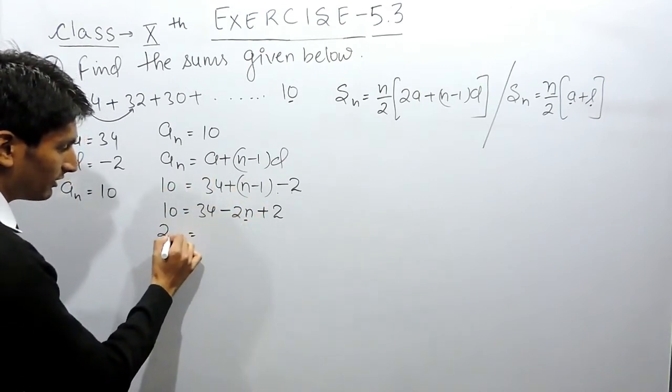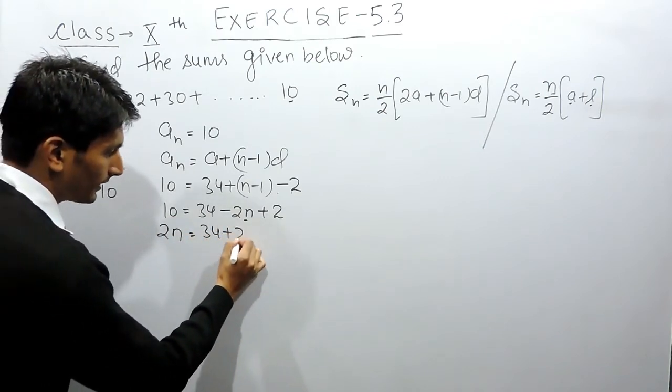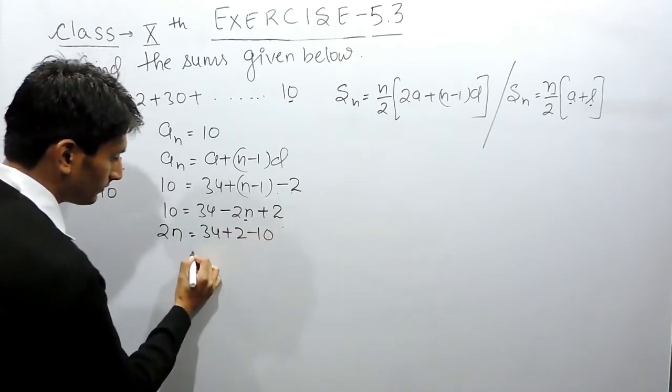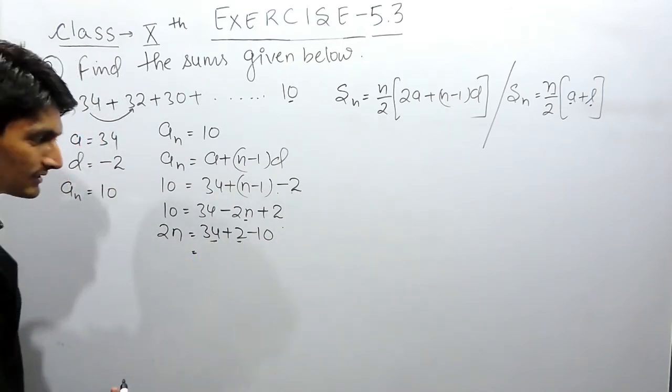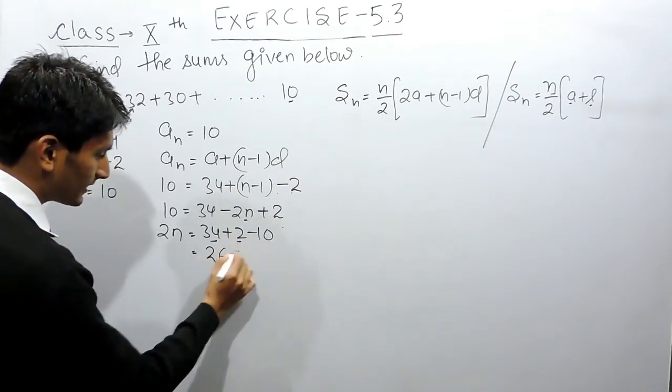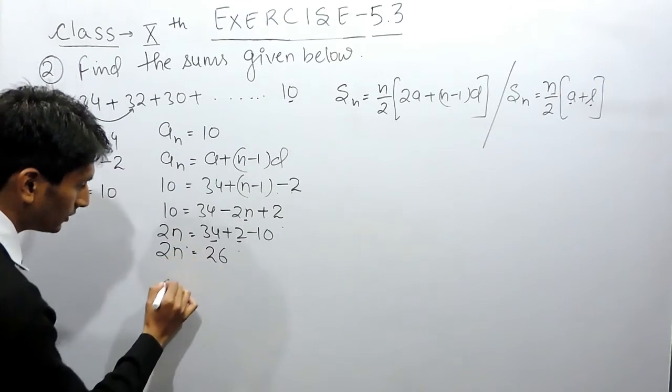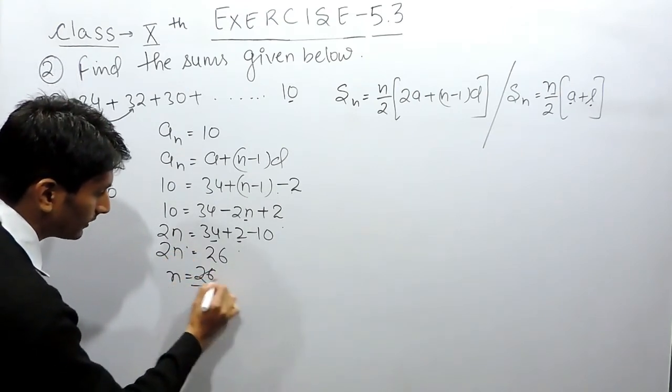Rearranging the equation, shifting variables to one side and constants to the other: 2n = 34 + 2 - 10. So 2n = 26, which gives n = 13. The number of terms is 13.